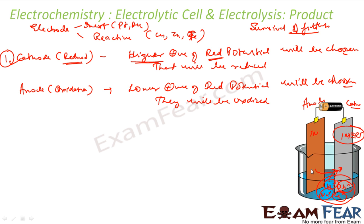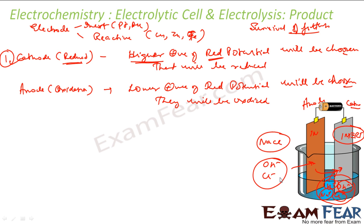We'll take one example of aqueous NaCl where I'll explain with actual values. At the cathode, out of H⁺ and Na⁺, we pick the one with the higher reduction potential. At the anode, out of OH⁻ and Cl⁻, we pick the one with more tendency to get oxidized, that means the lesser reduction potential.